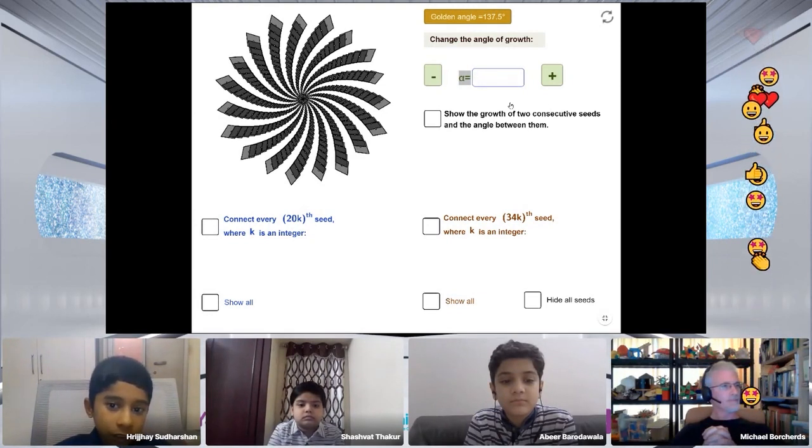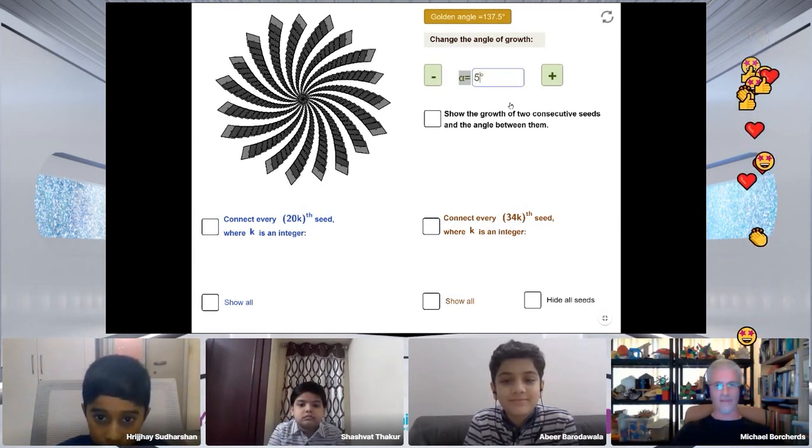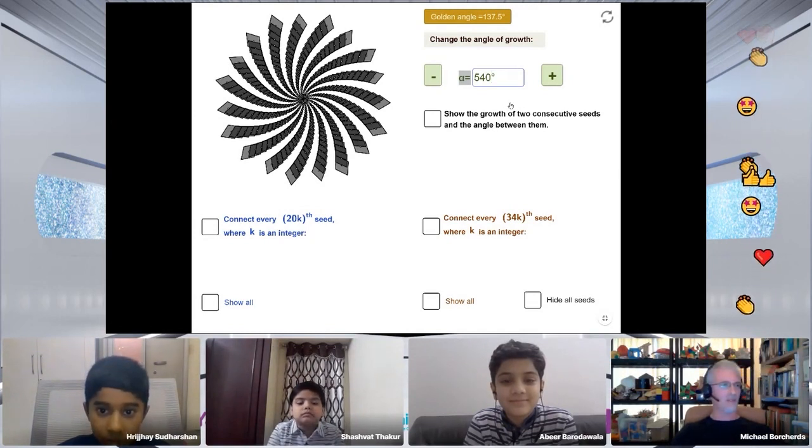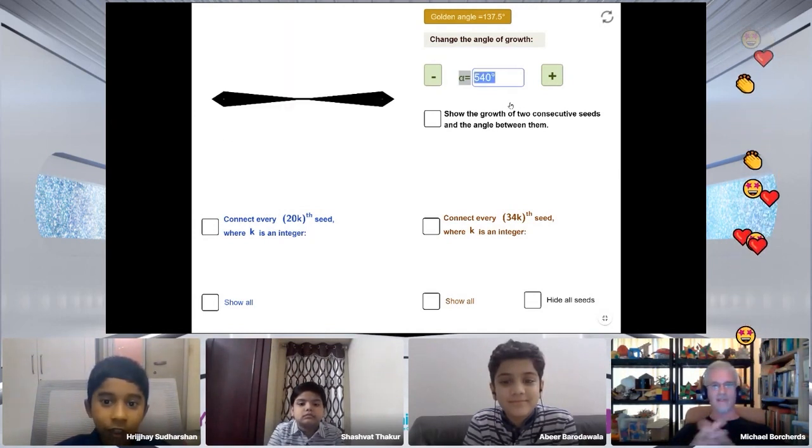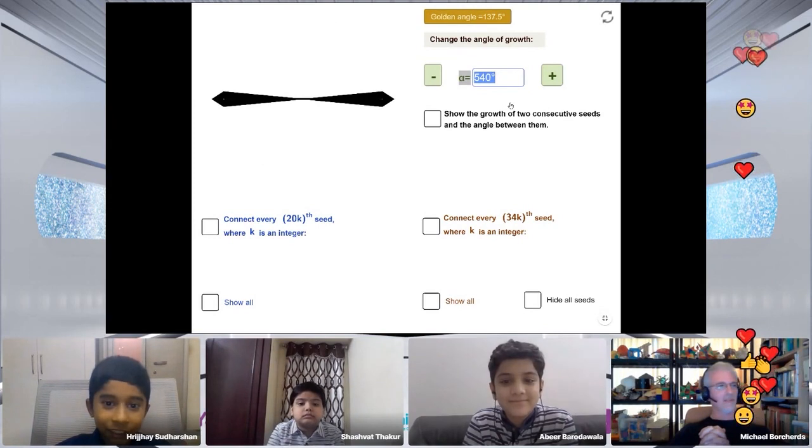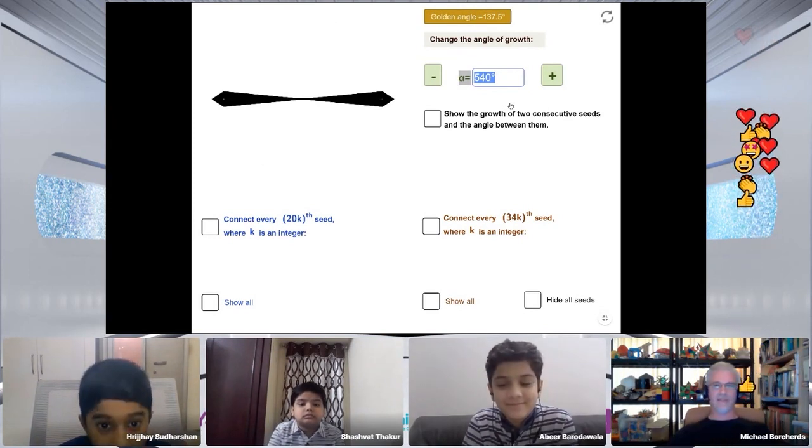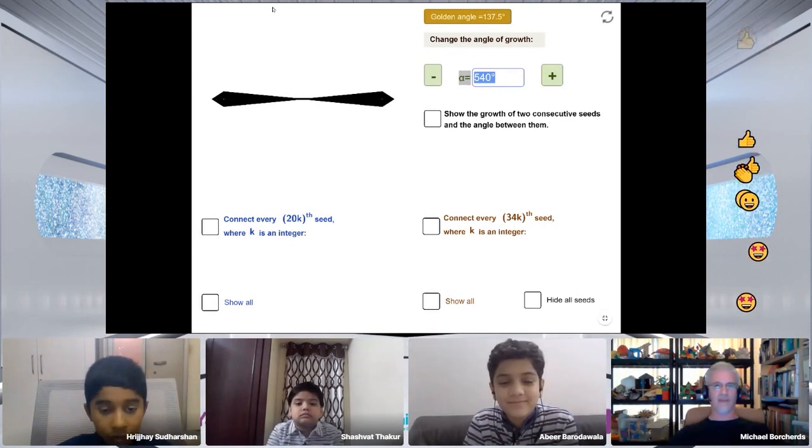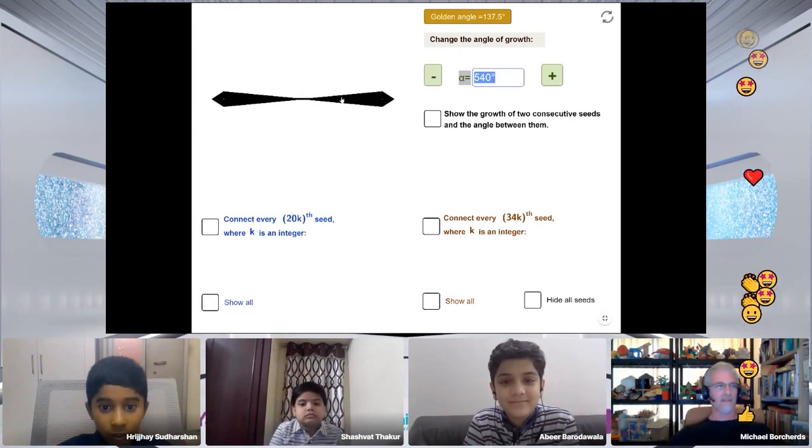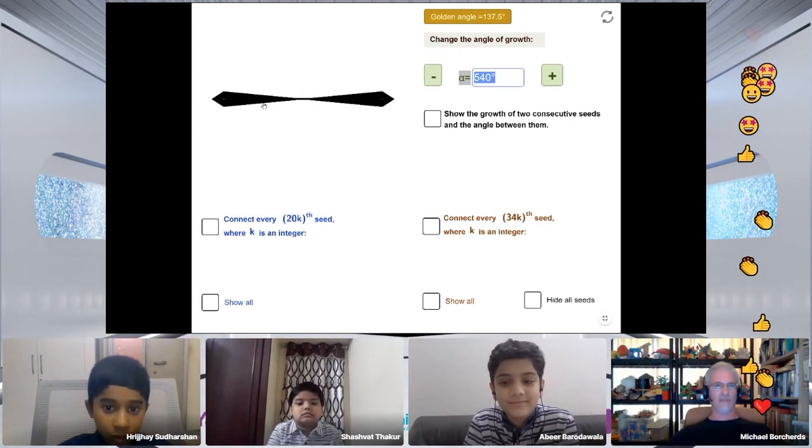540. That's a giant angle. Can we go that high? Is it going to break the computer? I think Fridge is trying to break the whole computer. Wow, so why has it done that? It's put some down, it's gone around 540 degrees which has gone here. It's gone 540 degrees, it's gone here. So it looks a bit like a propeller or something, doesn't it?